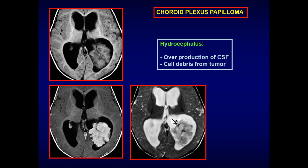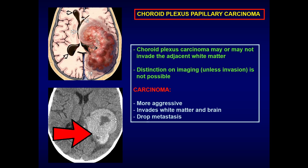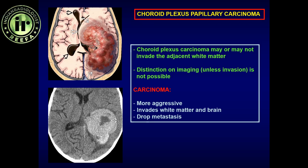Just as with ependymomas, when we see such a lesion it is our moral responsibility to image the entire neural axis for drop metastasis — this is what differentiates choroid plexus papilloma from papillary carcinoma. Papillary carcinoma is WHO grade 2 or 3, can invade surrounding soft tissue and brain parenchyma, and is very commonly associated with drop metastasis. The most common location in children is the atrial region; in adults it is the fourth ventricle. Choroid plexus papillary carcinoma occurs almost exclusively in children.